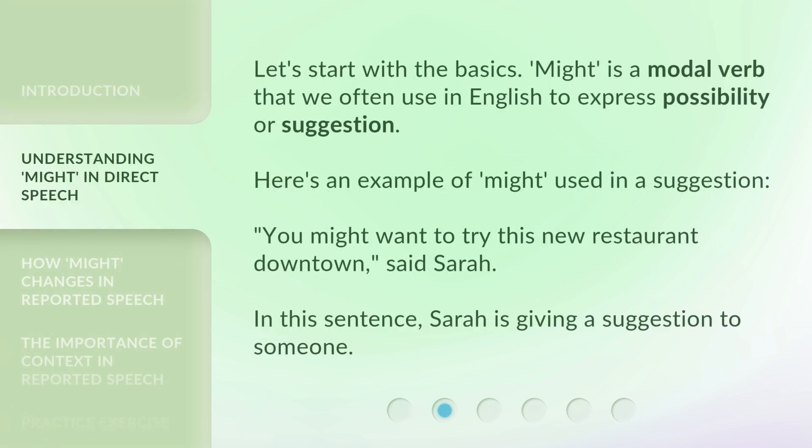Let's start with the basics. 'Might' is a modal verb that we often use in English to express possibility or suggestion. Here's an example of 'might' used in a suggestion: 'You might want to try this new restaurant downtown,' said Sarah. In this sentence, Sarah is giving a suggestion to someone.